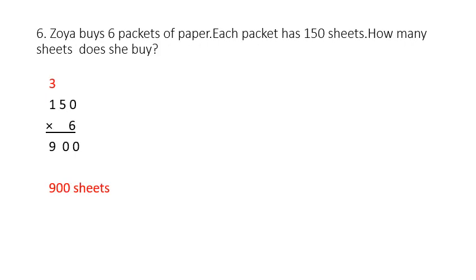Next question, Question number 6. Zoya buys 6 packets of paper. Each packet has 150 sheets. How many sheets does she buy? Children, total number of packets is 6 and each packet has 150 sheets. So here you have to find out the total number of sheets in 6 packets. We multiply 150 by 6.